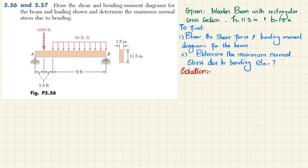Let's start with the solution. First step: remove the supports. Removing the left support gives reaction force A, and removing the right support gives reaction force B. We will find A and B using equilibrium conditions. The first equilibrium condition is that the sum of all moments about point A equals zero.